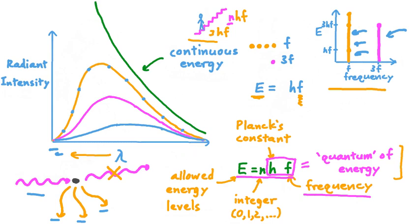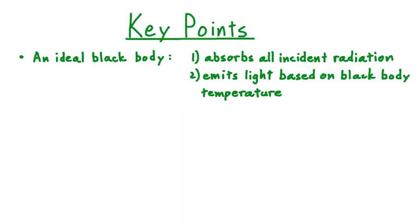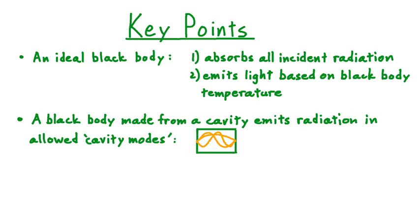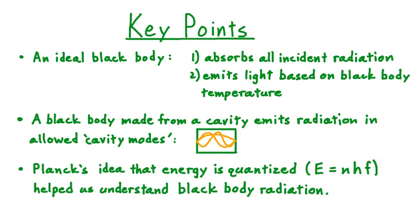With that understanding of this plot, let's now summarize what we've learned about blackbody radiation. We saw that an ideal blackbody absorbs all incident radiation and also emits light based on its temperature. We then saw that a blackbody made from a cavity, like our box, emits radiation in what are called cavity modes — waveforms that are permitted based on the cavity's geometry. And lastly, we learned that Planck's idea that energy is quantized tells us that the energy of a single photon equals the frequency of that photon times Planck's constant, and that the energy of a collection of identical photons equals h times their frequency times the number of photons. This notion helped us understand blackbody radiation and reconcile the difference between the predictions of theory and experimental data.